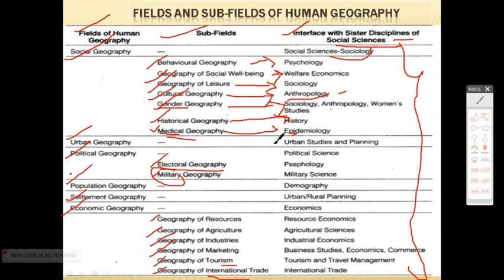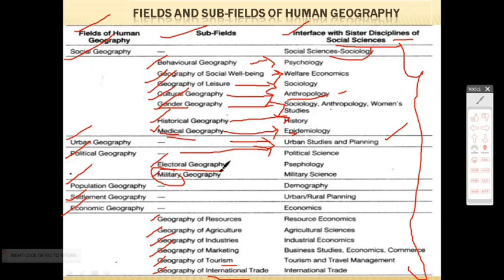The next field, Urban Geography, is related to urban studies and planning, which is also a social science. Political Geography is related to political science. The sub-field of Political Geography — Electoral Geography — is related to psephology. Military Geography has an interface with military science. Population Geography has an interface with demography, which is the study of population.